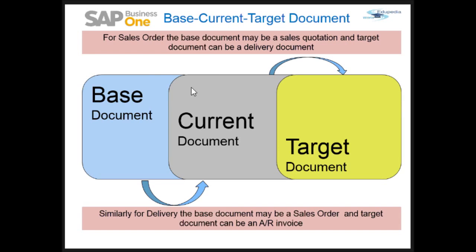In our case, for a sales order, the base document may be a sales quotation and the target document can be a delivery document. Similarly, for a delivery, the base document may be a sales order and the target document can be an AR invoice. So when you open a document, there will be a base document associated with it and a target document that you will be creating.